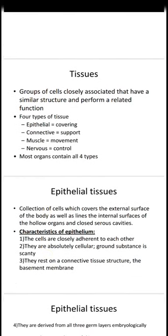First, what is a tissue? Tissues are a group of cells closely associated that have a similar structure and perform a related function. For example, myocytes are similar in structure and perform the same function — contraction and relaxation of a muscle — so they comprise a tissue. There are four total types of tissues in the body: epithelial tissues, connective tissues, muscle tissues, and nervous tissues, and most organs contain all four types.